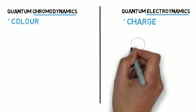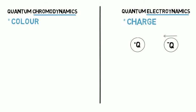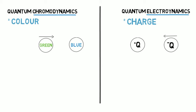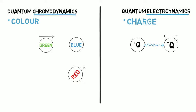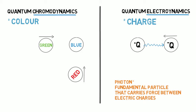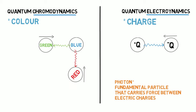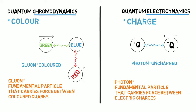Anything with charge will feel the electromagnetic force and interact with other charges, just like anything with colour will feel the strong force and interact with other colours. The photon, which makes light, is the fundamental particle that carries the force between electric charges. The gluon is the strong force analogue, but in contrast to the photon, which does not itself carry electric charge, the gluon always carries one unit of colour and one unit of anti-colour, meaning it can interact with itself.